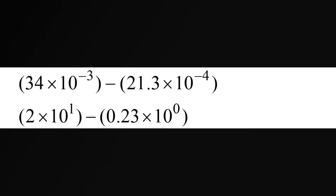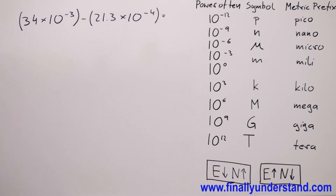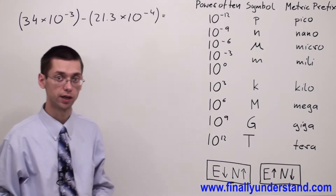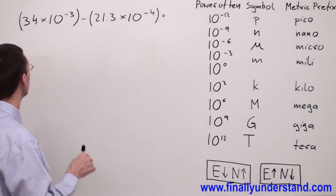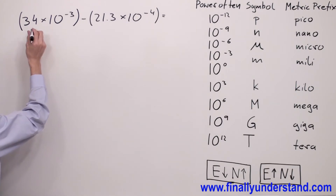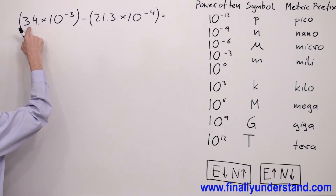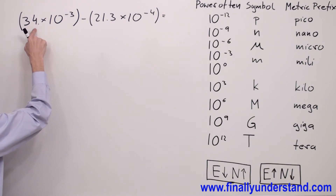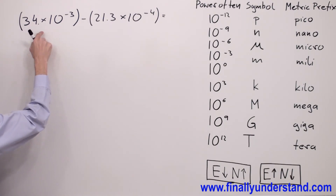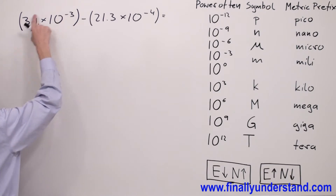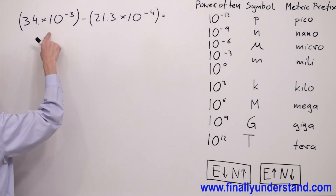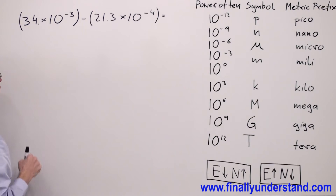Let's take a look at the first example. We have to perform the subtraction and give the answer in engineering notation. Look at the first number. The invisible decimal point is at the end of 34. On the left side of the decimal point, the number is between 1 and 999, and the exponent is a multiple of 3. So this is already in engineering notation.